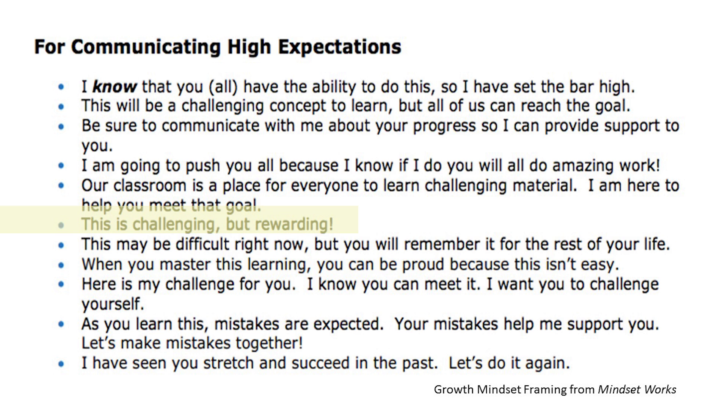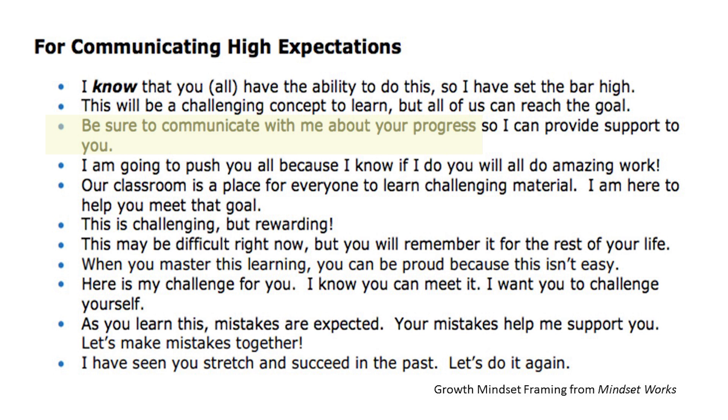Other ways to resolve the achievement gap involve communicating high expectations with support. Educators can say things like, "This is challenging but rewarding," or "As you learn this, mistakes are expected — let's make mistakes together," or "Be sure to communicate your progress with me so I can provide support." Many first-generation students don't know that office hours are open and that they're welcome to come see their professors.